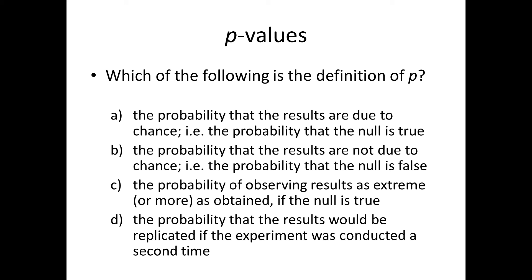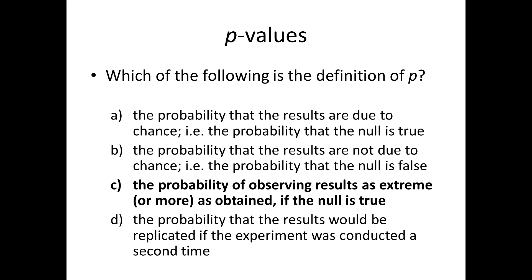Okay so hopefully you pause the video and you haven't cheated. Well the true definition of the p-value is C. The probability of observing results as extreme or more as the ones you've obtained if the null hypothesis is true. So most people are really surprised by this because most people believe that the definition of the p-value is A. This is that the probability that the results are due to chance or put another way the probability that the null hypothesis is true. This is completely incorrect.